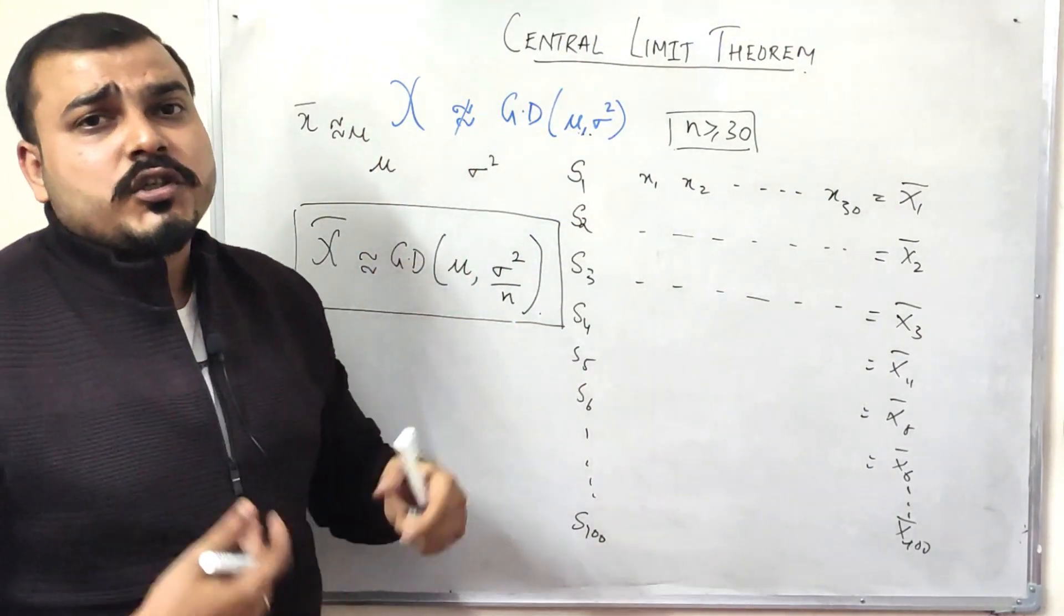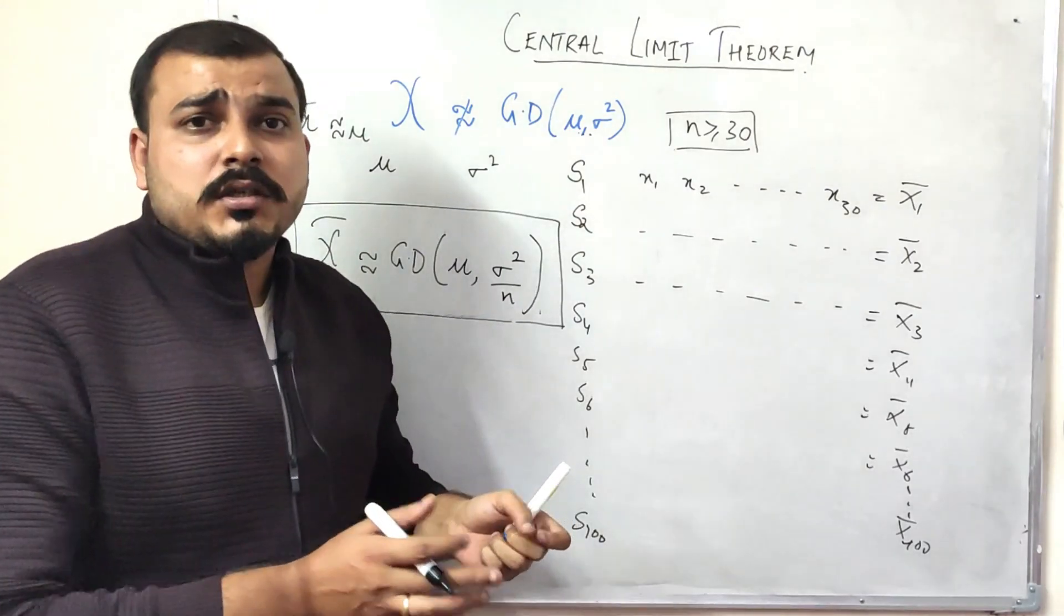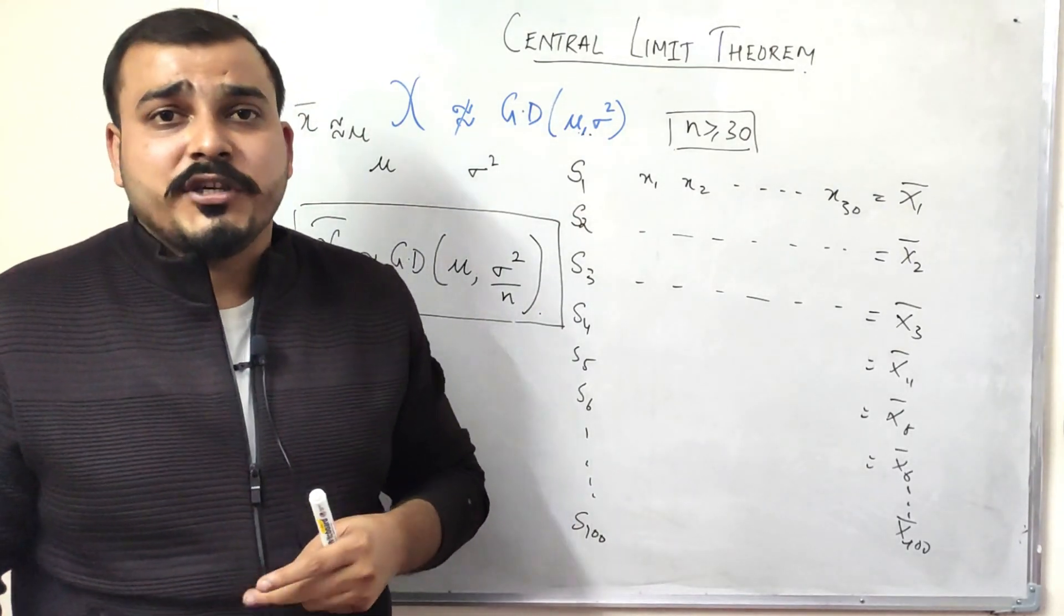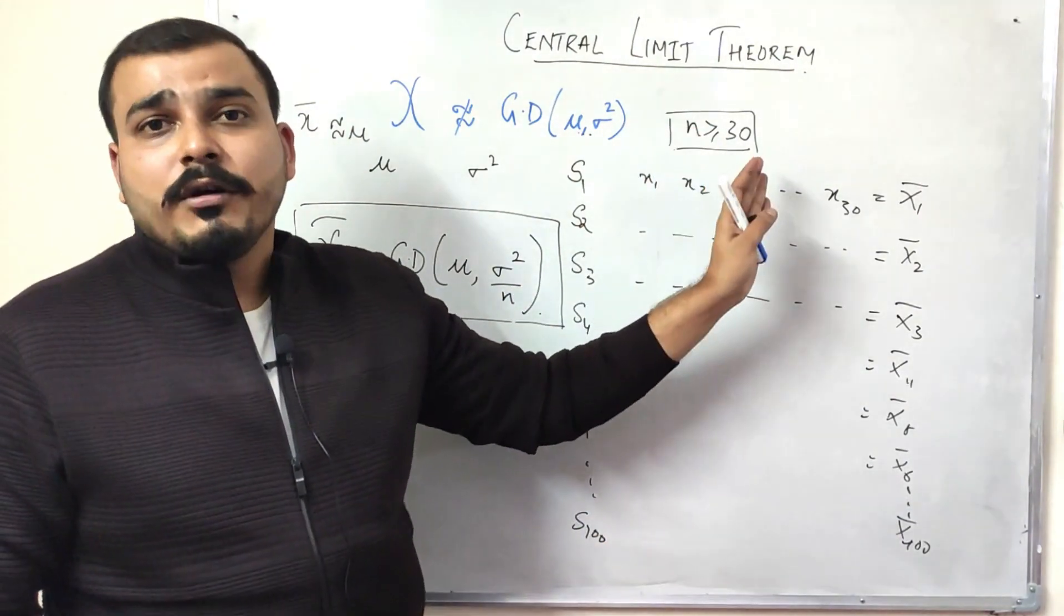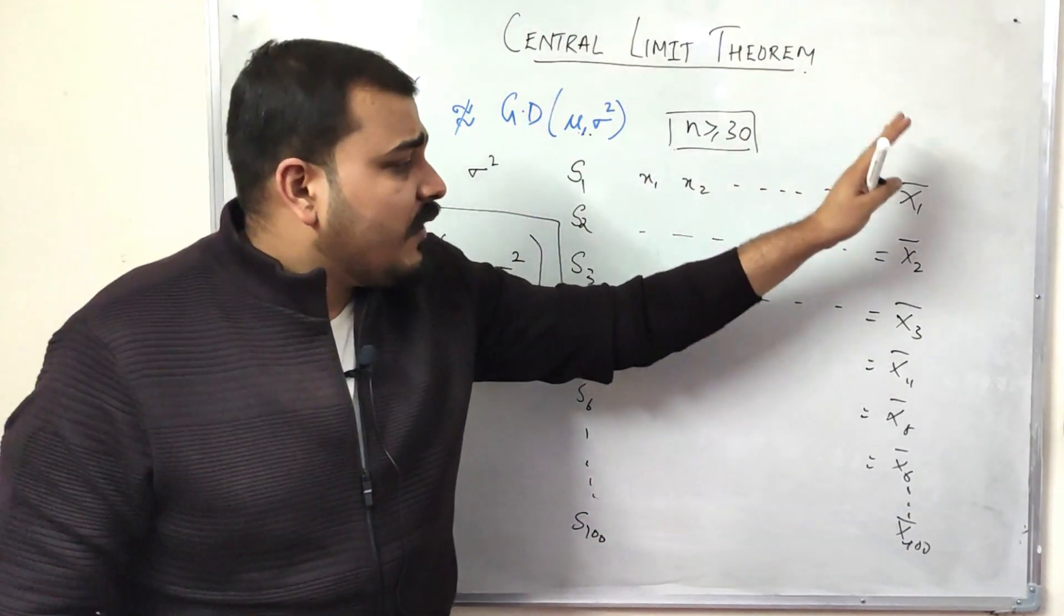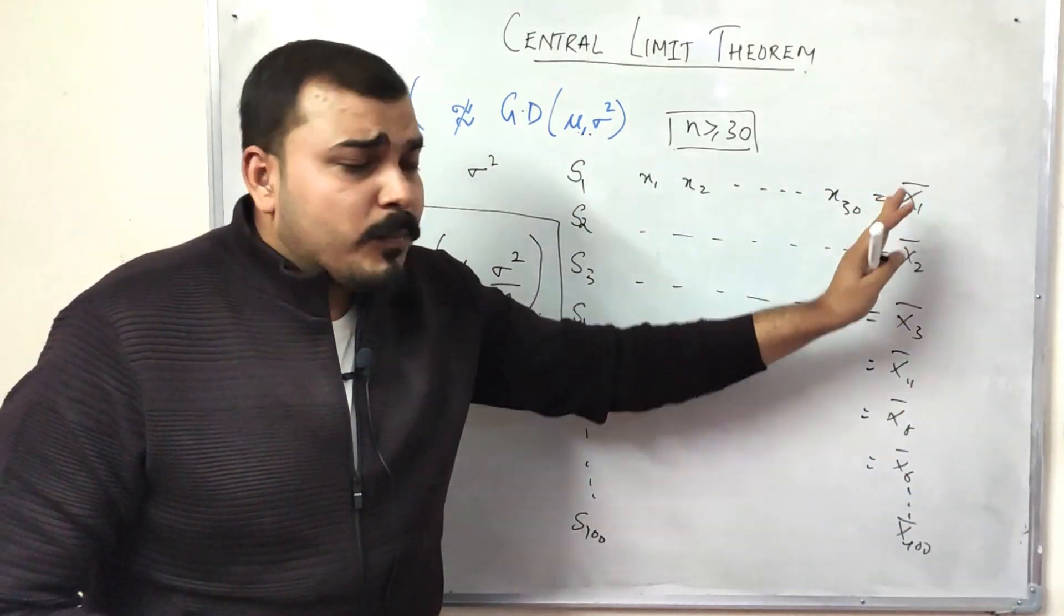So this is what Central Limit Theorem specifies. Let your random variable be any distribution—it may be a Gaussian distribution, it may not be a Gaussian distribution. But if we take multiple samples considering that my data points is always greater than or equal to 30.